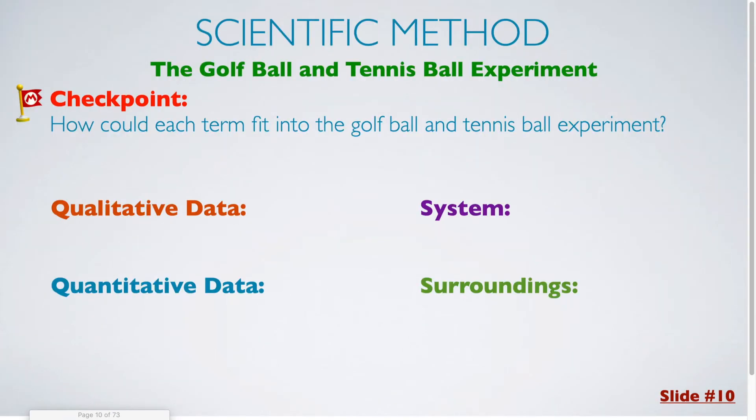Here we've come to the first checkpoint question for our notes. For each of our checkpoint questions that you're going to reach, you need to write out the solutions to these in your notebook. How could each term fit into the golf ball and tennis ball experiment? Well, for qualitative, this could be the color. We noticed that one of the objects was green and the other object was white. We could also say the texture would be qualitative data, whether one object was smooth versus whether it was fuzzy. And its ability to bounce or not bounce. So those are all examples of qualitative data.